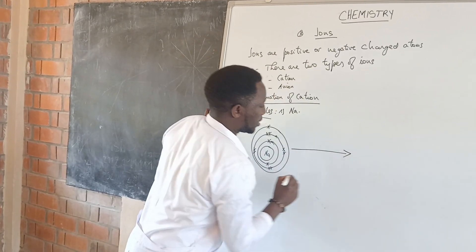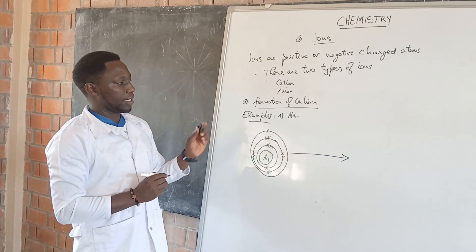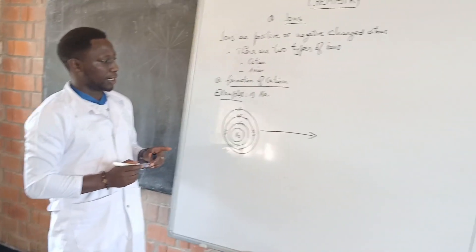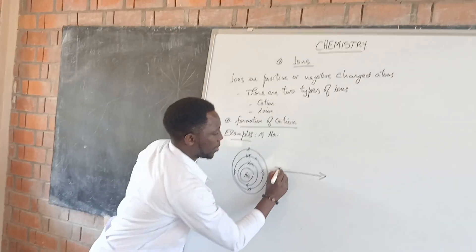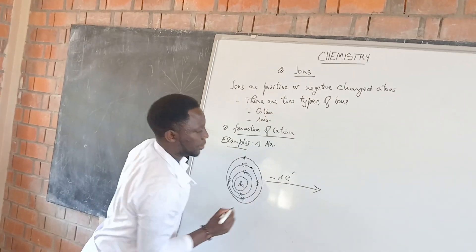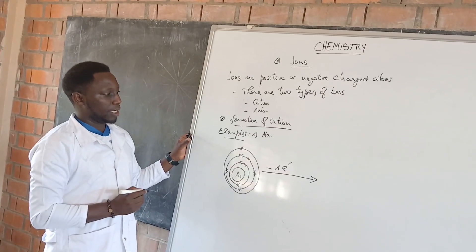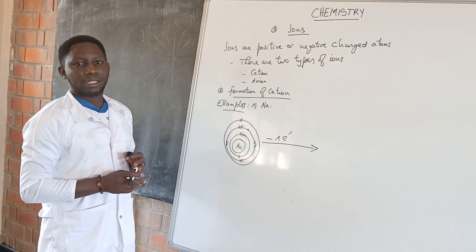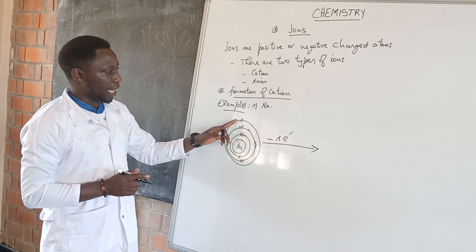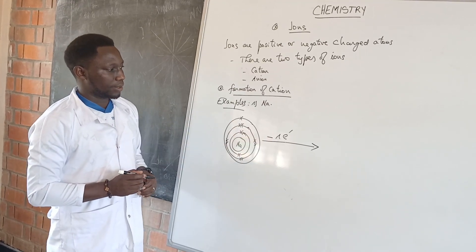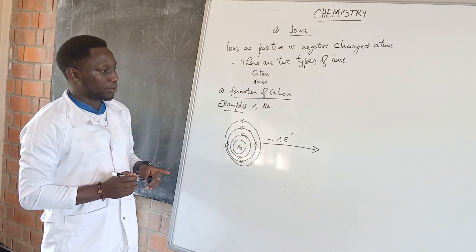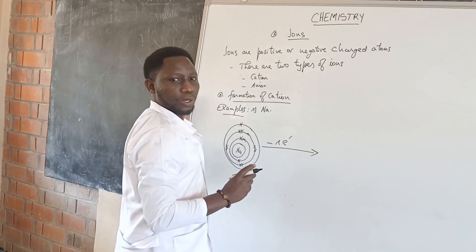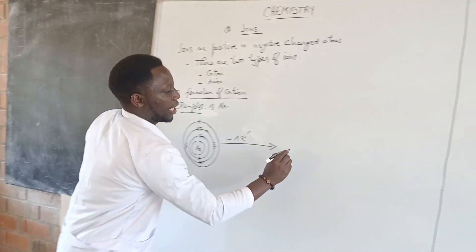Sodium has 11 electrons. It has one electron in the outermost shell. It loses one electron in order to be like the noble gases. 11 minus 1 equals 10. That's why I am going to show this structure of 10 electrons.